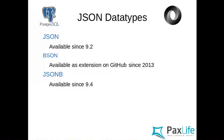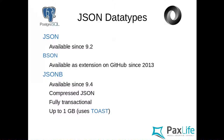Then JSONB was invented, introduced in version 9.4, and it's completely different from what we had before. It's compressed JSON, which is one of the most important things — when it writes data to disk you don't see any JSON stored there. It's fully transactional, meaning everything you can do with Postgres ACID compliance also works with JSON. You can use it for up to one gigabyte per field.